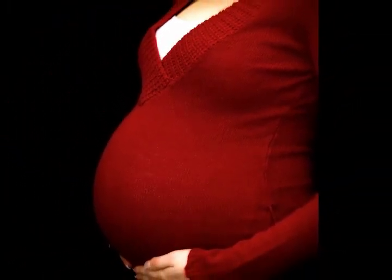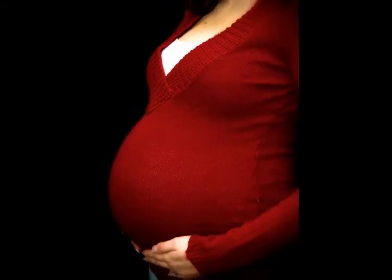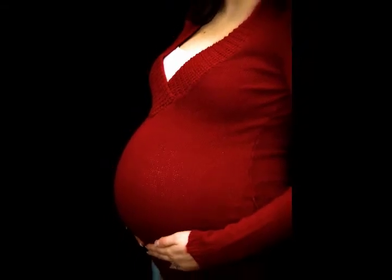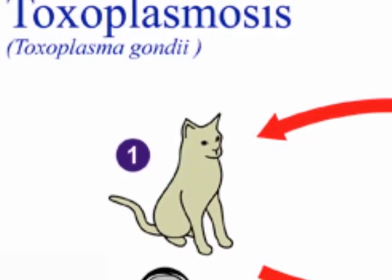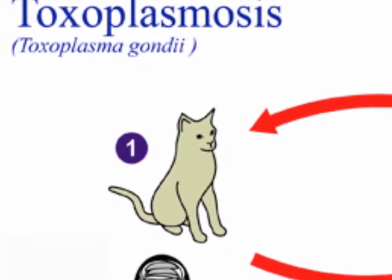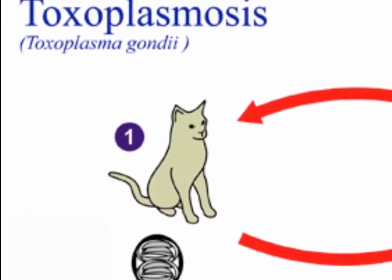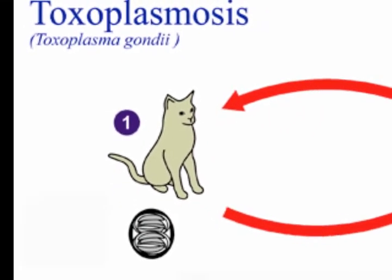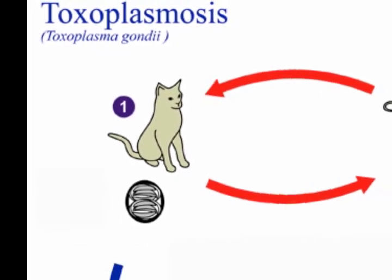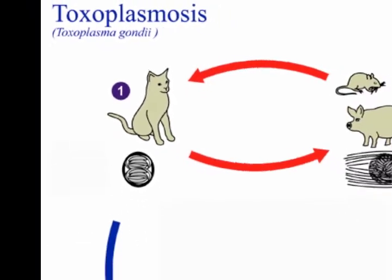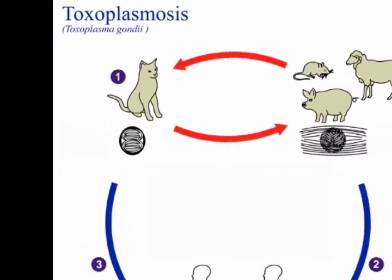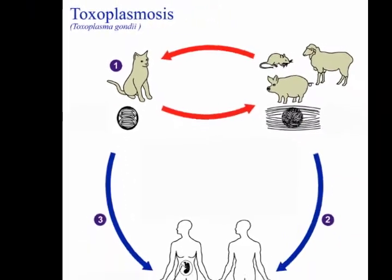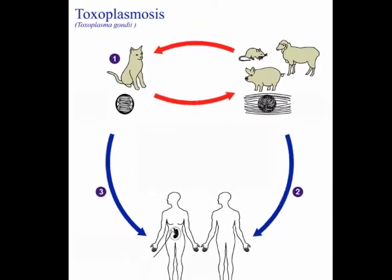However, to people with compromised immune systems and pregnant women, it can be deadly. Humans become infected with Toxoplasmosis by ingesting food and water contaminated with oocysts from infected cat feces, or by ingesting tissue cysts in raw meat from infected animals.